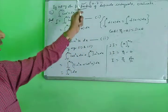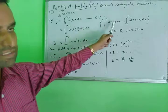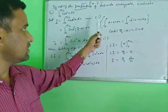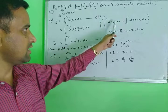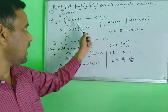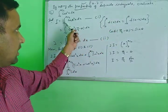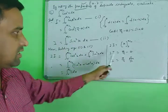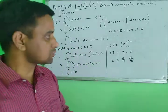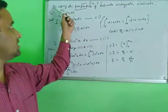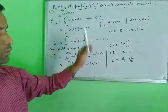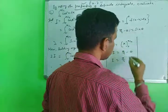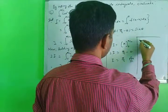When you are using a property, mention which property you are using — write it in the side bracket. Then apply the property and solve. By adding the equations, you get the result. You can also solve this question without the property — in that case, you break down cos²x into its simpler form.